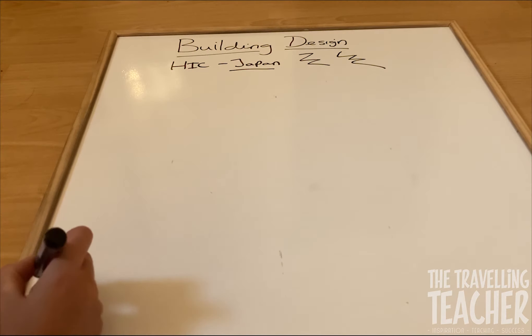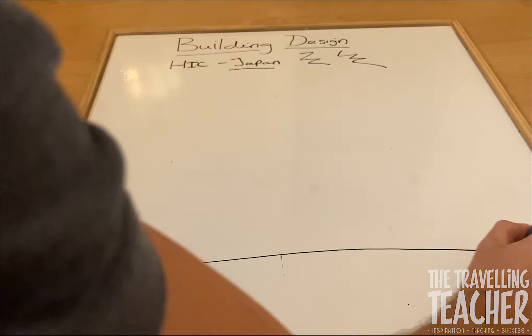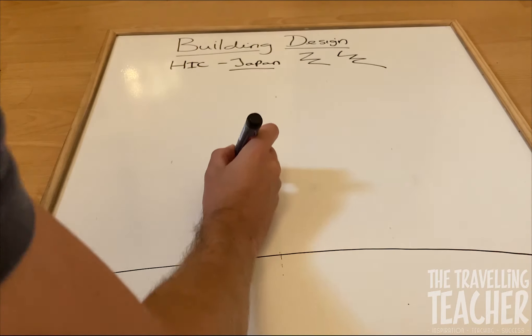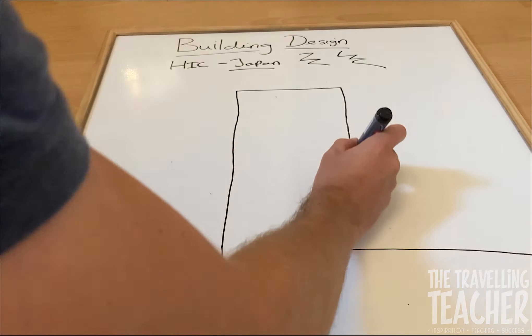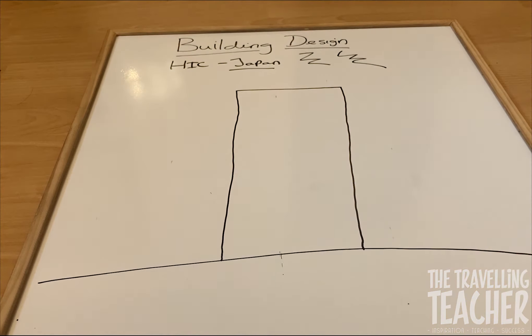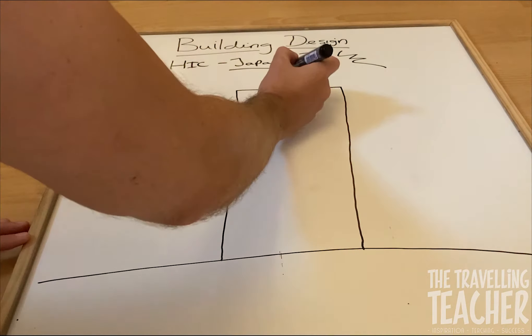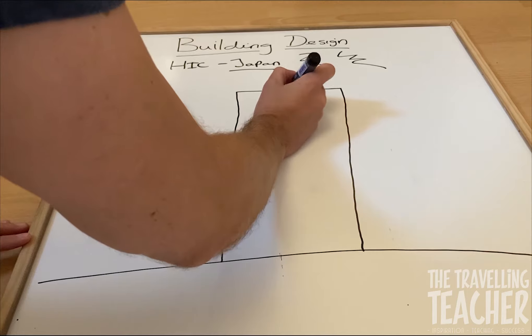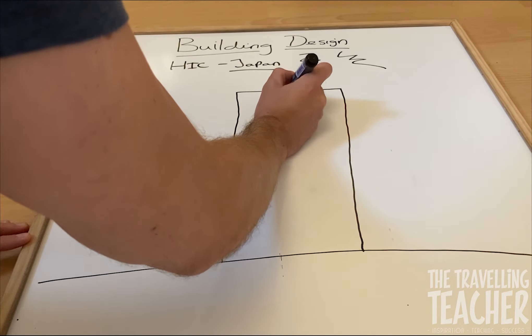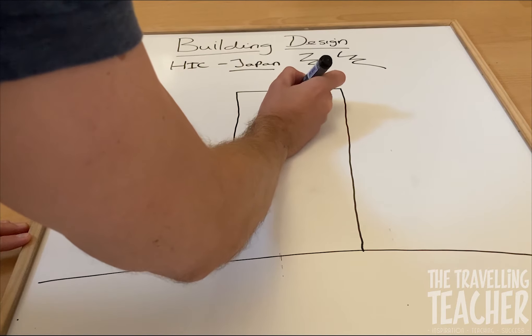So here we go. There's the ground and there is our building. There we go. Now the first thing they do with their buildings is in the roof they have either rolling weights or they can have a pendulum. So there's our pendulum.